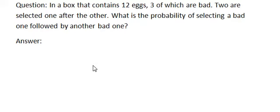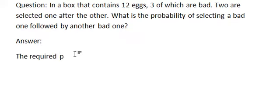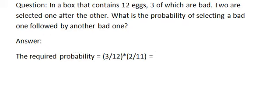Two are selected one after the other. What is the probability of selecting a bad one followed by another bad one? The answer is: the required probability equals 3/12 × 2/11 = 0.0454.